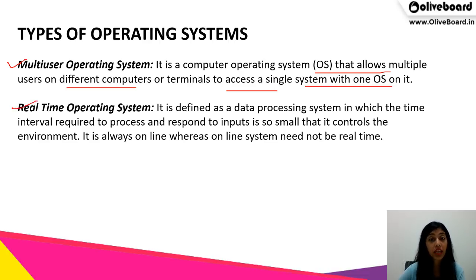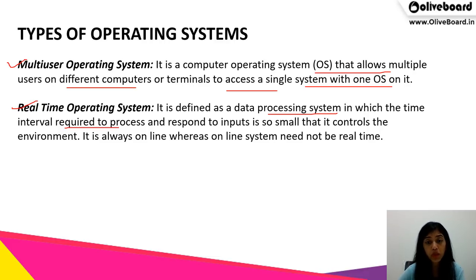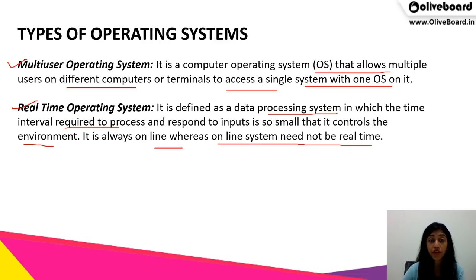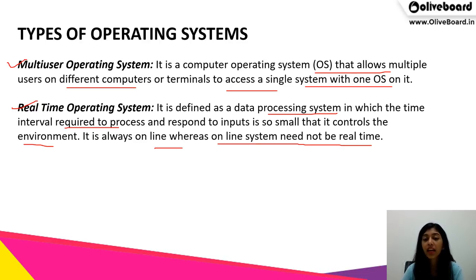The last one is real time operating system. It is defined as a data processing system in which the time interval required to process and respond to inputs is so small that it controls the environment. It is always online, whereas online systems need not be real time. It provides solutions very quickly, but it is not necessary that everything online is a real time operating system.